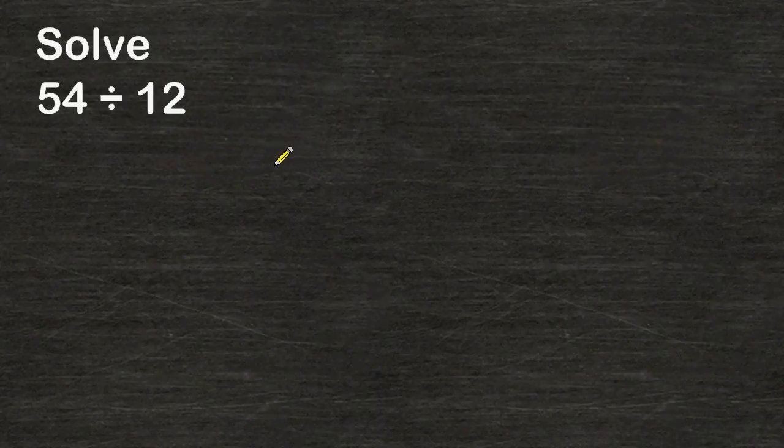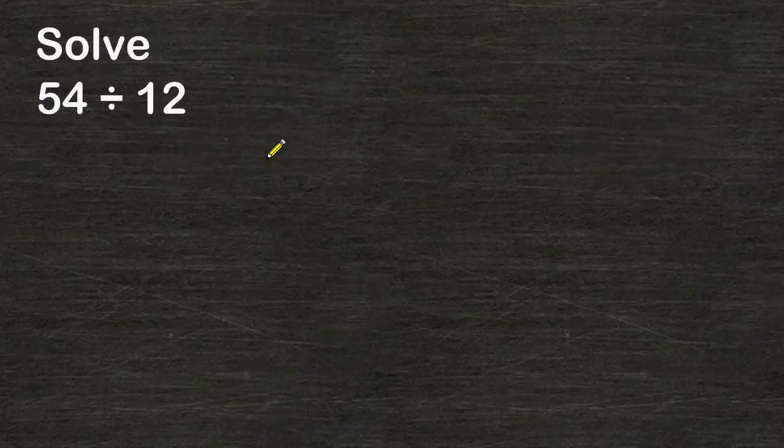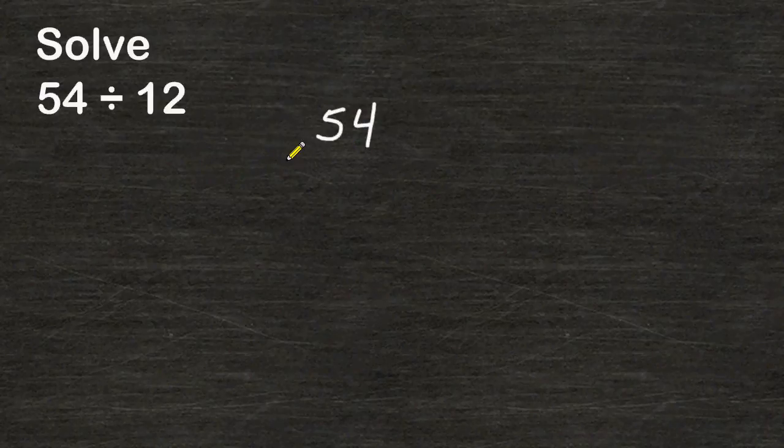In the problem 54 divided by 12 we are going to have a remainder and we are going to review how to express your remainder as a decimal. The first thing that we are going to do is divide 54 by 12 and see what our remainder is.